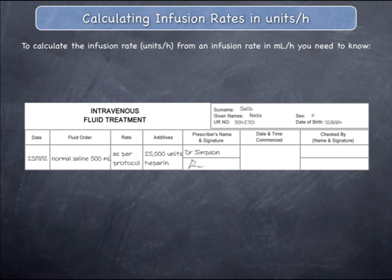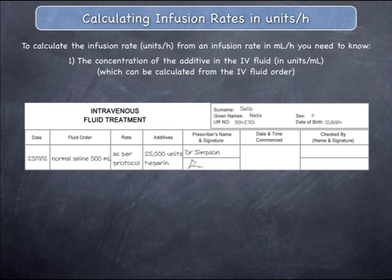To calculate the infusion rate in units per hour when given an infusion rate in mils per hour, you need to know the concentration of the additive in the IV fluid in units per mil, which can be calculated from the IV fluid order, and the rate of infusion in mils per hour that is being administered to the patient.